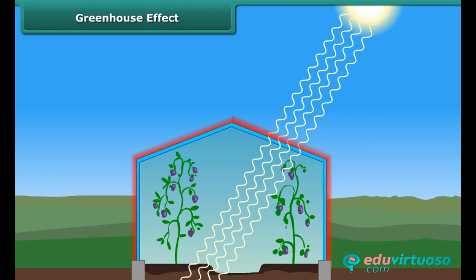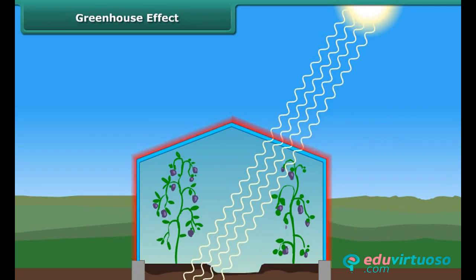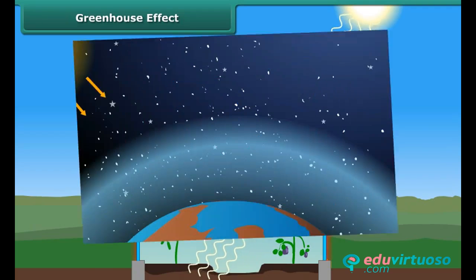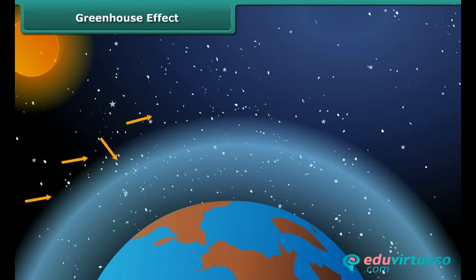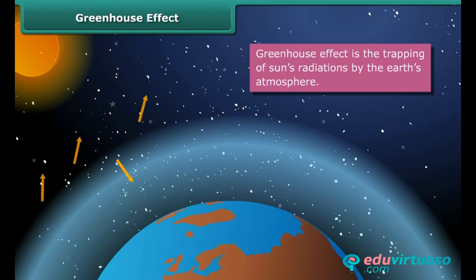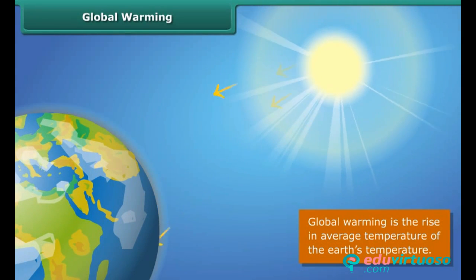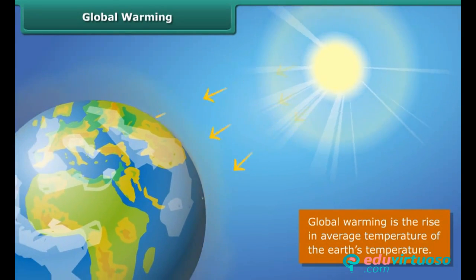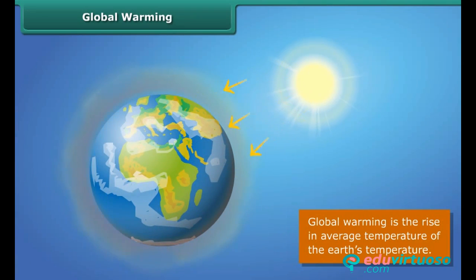Similarly, greenhouse gases like carbon dioxide, methane, and nitrous oxide in the atmosphere act like glass panes. When the sun's radiation reaches our atmosphere, some rays are reflected back into space and some are trapped by greenhouse gases, causing the atmosphere of the earth to warm up. This is global warming — the earth is heating up. Scientists believe that greenhouse gases like carbon dioxide trap heat from the sun and will increase the temperature of Earth's atmosphere even more in coming years.